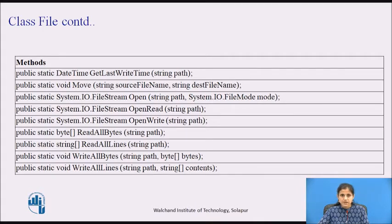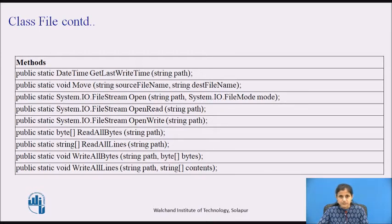The ReadAllBytes method opens a binary file, reads the contents of the file into a byte array, and then closes the file. It returns a byte array containing the contents of the file. The ReadAllLines method opens a text file, reads all lines of the file into a string array, and then closes the file.